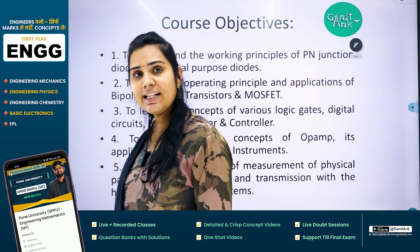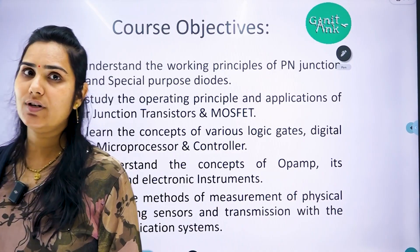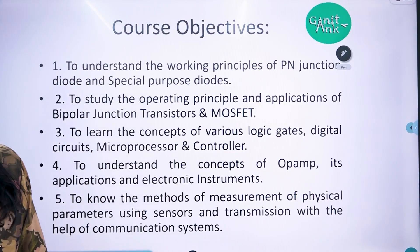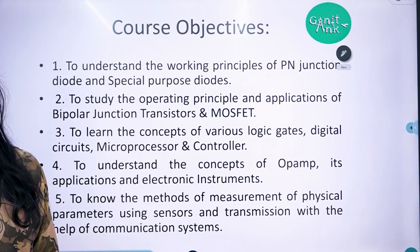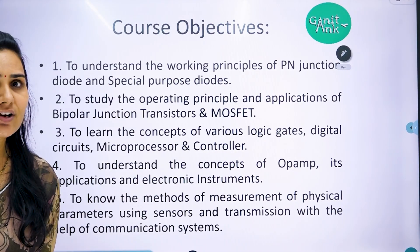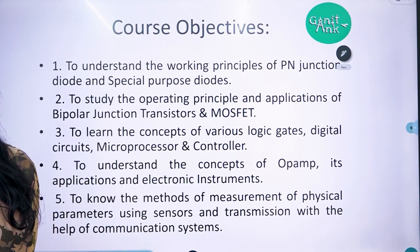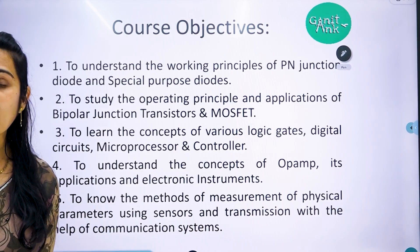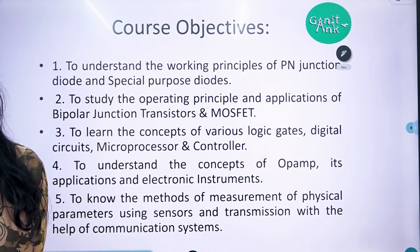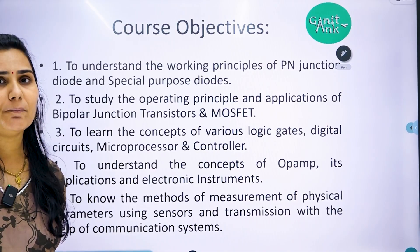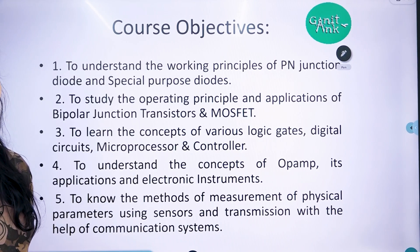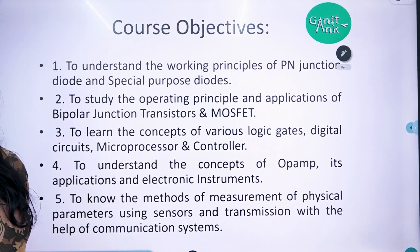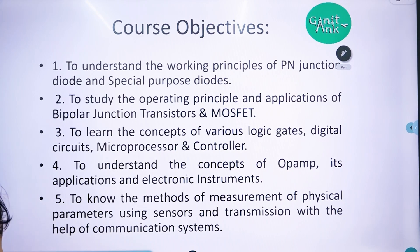First of all, in this subject we are going to discuss the components with the help of which we can make any electronic circuits. All of you know that electronic circuits are made up of components. So those active components and passive components we are going to discuss in unit number 1, and how with the help of those components we can design any electronic circuit will also be discussed in unit numbers 1 and 2.